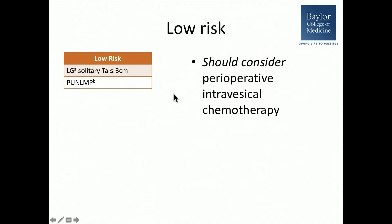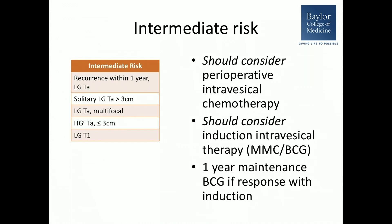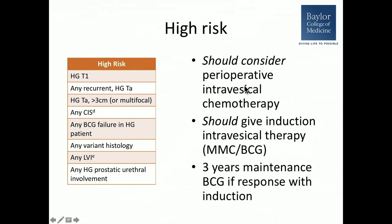For low-risk disease — a single small low-grade TA or PUN-LMP — you should consider perioperative intravesical chemotherapy. That is the perfect patient for a single dose of chemotherapy, as you won't need to subject them to six weeks of additional intravesical therapy. For intermediate risk, you should consider perioperative intravesical chemotherapy and induction intravesical therapy. If you give BCG, one year of maintenance is sufficient — some European EORTC data supports that.